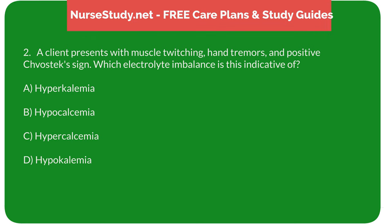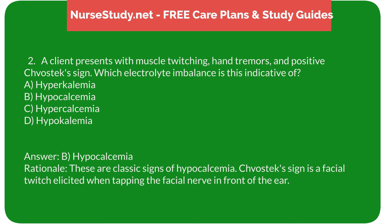Question 2: A client presents with muscle twitching, hand tremors, and positive Chvostek's sign. Which electrolyte imbalance is this indicative of? A. Hyperkalemia. B. Hypocalcemia. C. Hypercalcemia. D. Hypocalcemia. Answer: B. Hypocalcemia. Rationale: These are classic signs of hypocalcemia. Chvostek's sign is a facial twitch elicited when tapping the facial nerve in front of the ear.